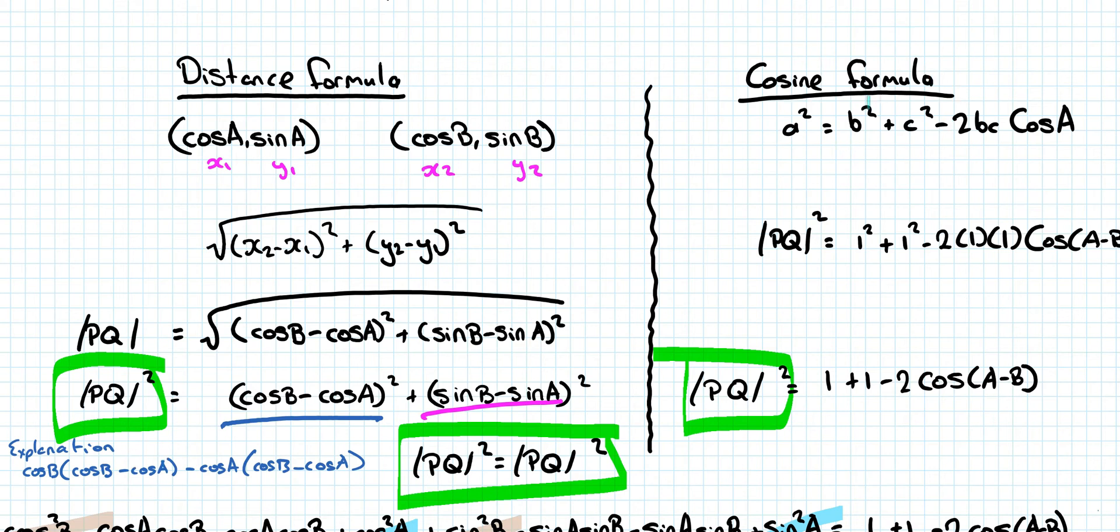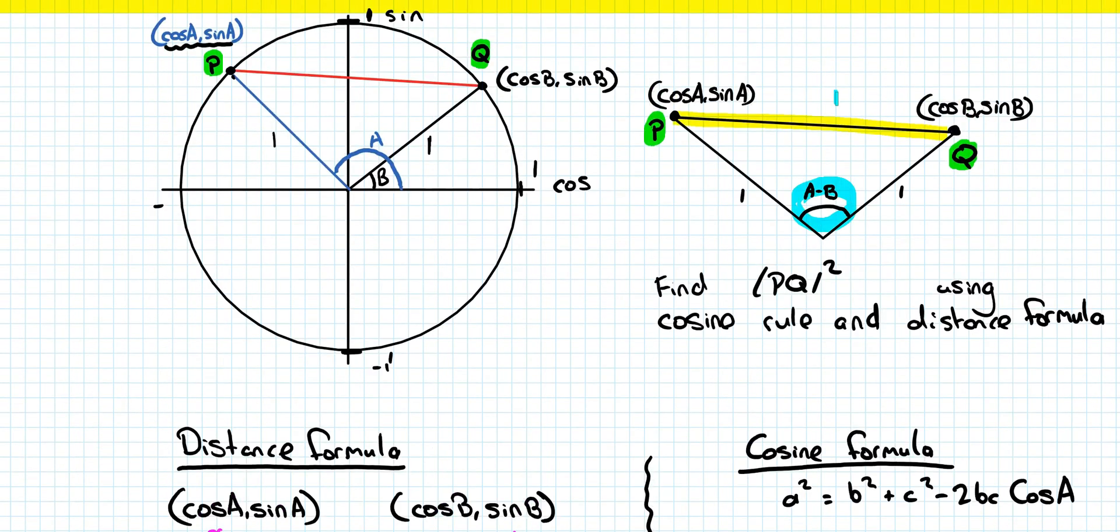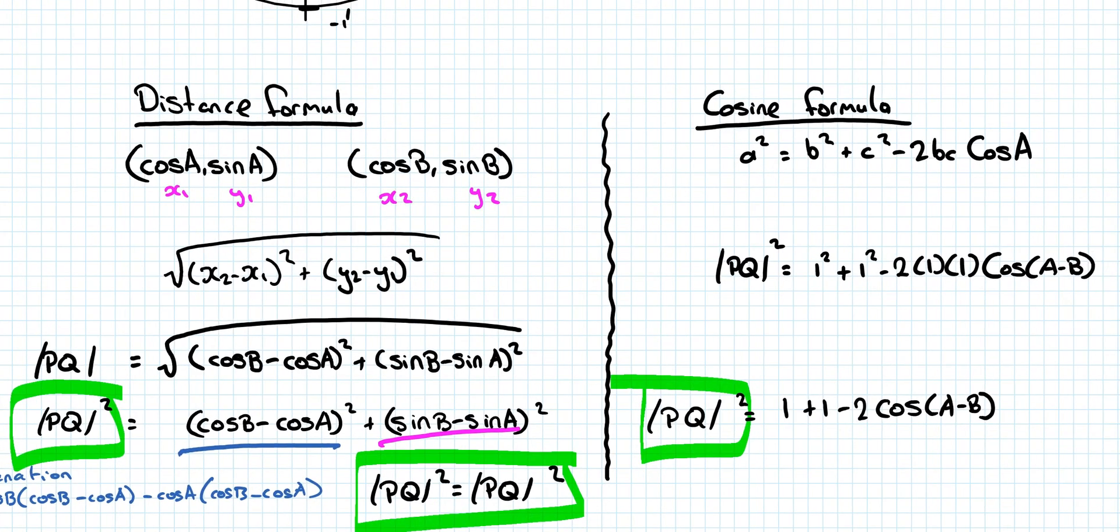The cosine formula. Making sure the side we're looking for, a, is opposite the angle that we know. Now, what angle do we know? We know this angle, so this is going to be our side that is opposite. And this side is called PQ. So, PQ squared, filling it in for a. We knew the two sides of the triangle were 1 and 1. The two sides of the triangle again, 1 and 1. And the angle that we're referring to is a minus b. Multiply it out, you're not really left with much.